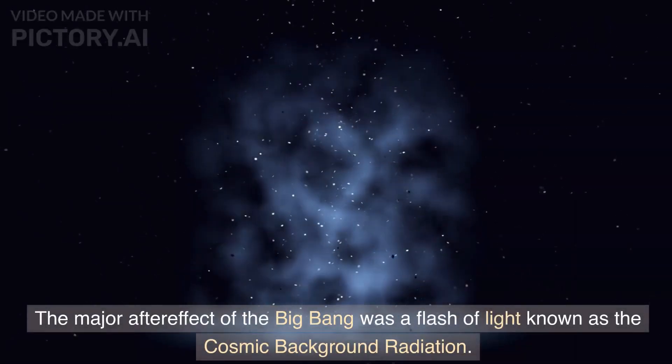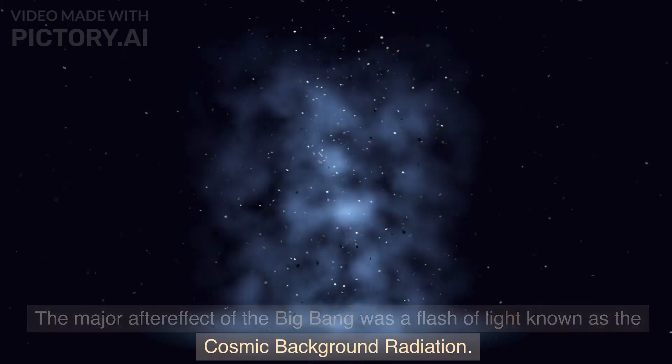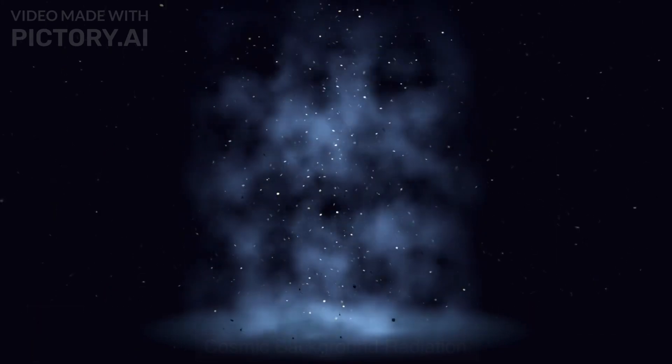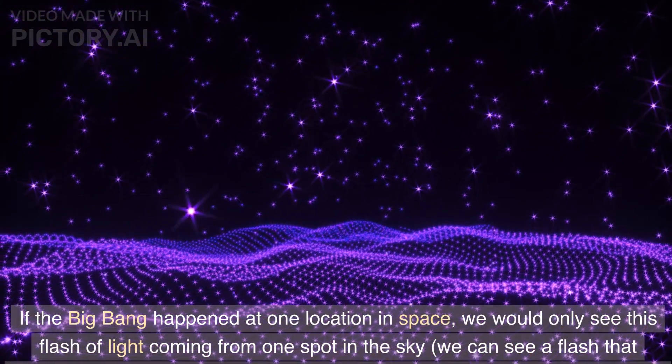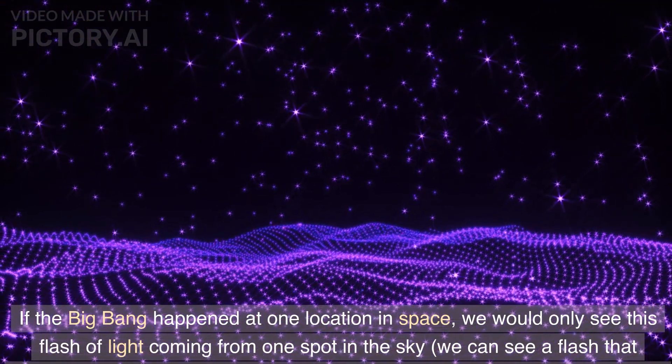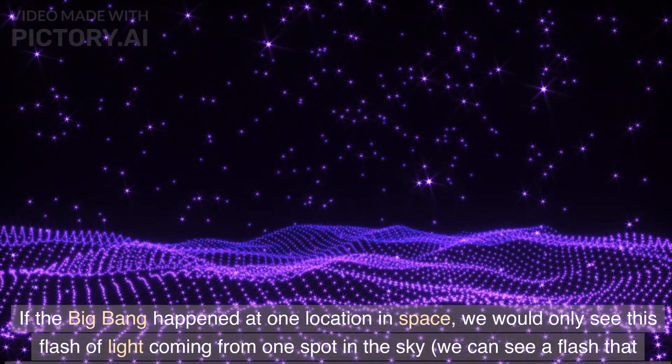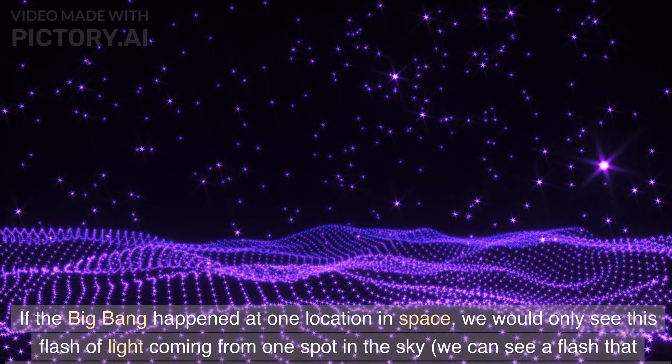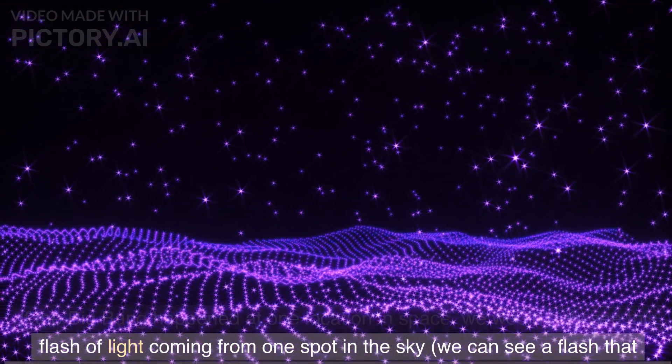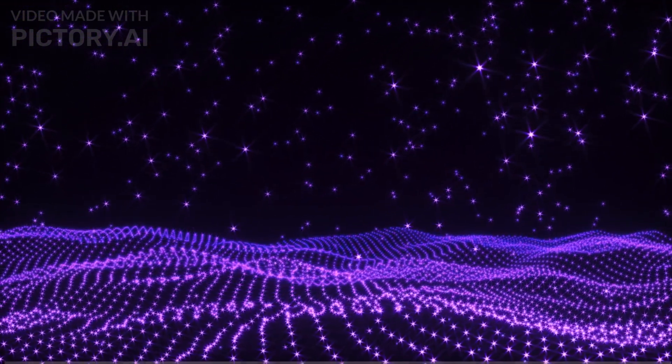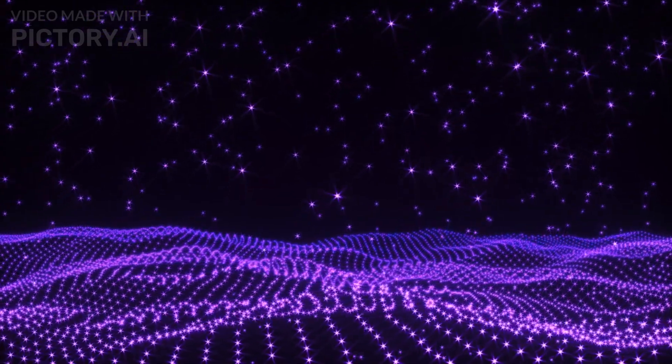The major aftereffect of the big bang was a flash of light known as the cosmic background radiation. If the big bang happened at one location in space, we would only see this flash of light coming from one spot in the sky. We can see a flash that happened so long ago because light takes time to travel through space and the universal scale is so big.